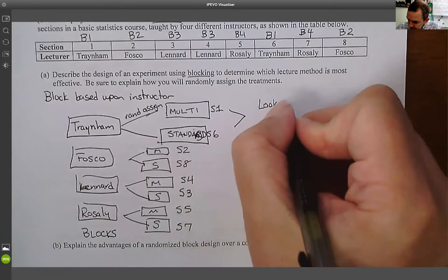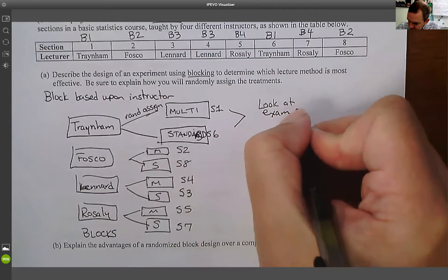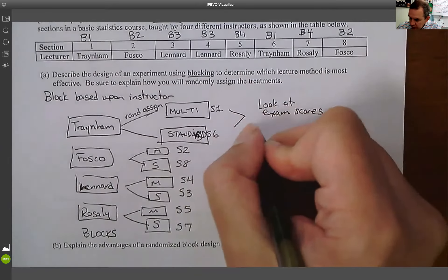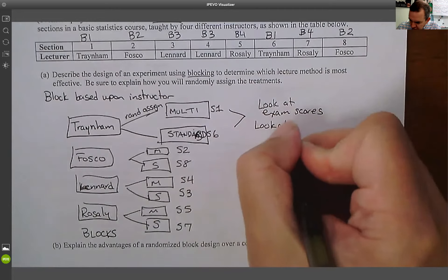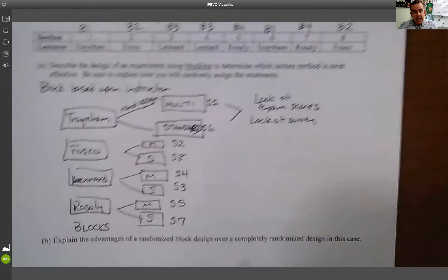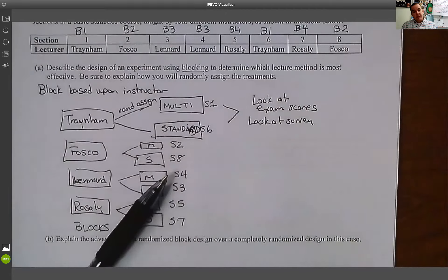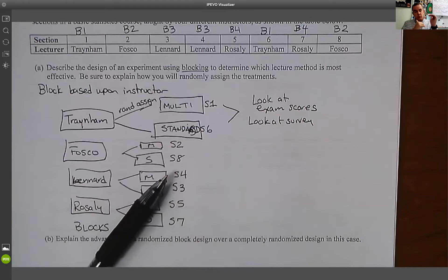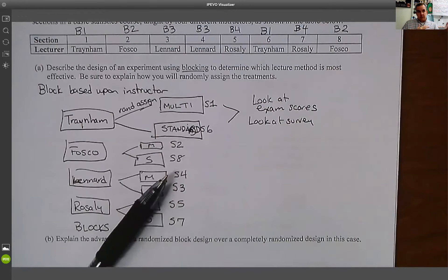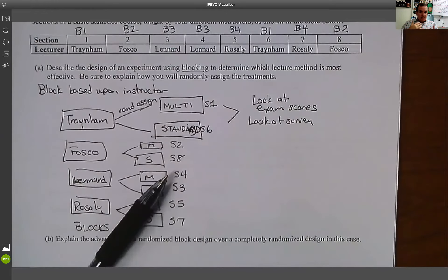Now, what's going to happen is at the end of the semester, I'm going to submit a survey. And what I'm going to do is I'm going to look at their exam scores. And I'm also going to look at a survey that I'll put together that I'll ask them their opinion. And what I'm going to do is I'm going to compare them side by side. I'm going to see, like, did Traynum have one class that did better in one method versus the other? And did the students' opinions stronger in one method versus the other? So what I'm going to do is I'm going to do my comparison within blocks first.